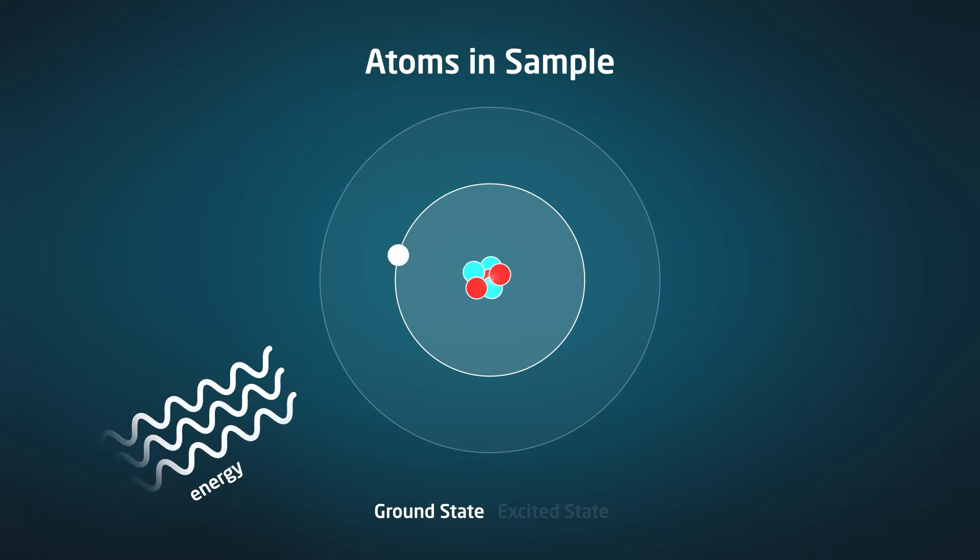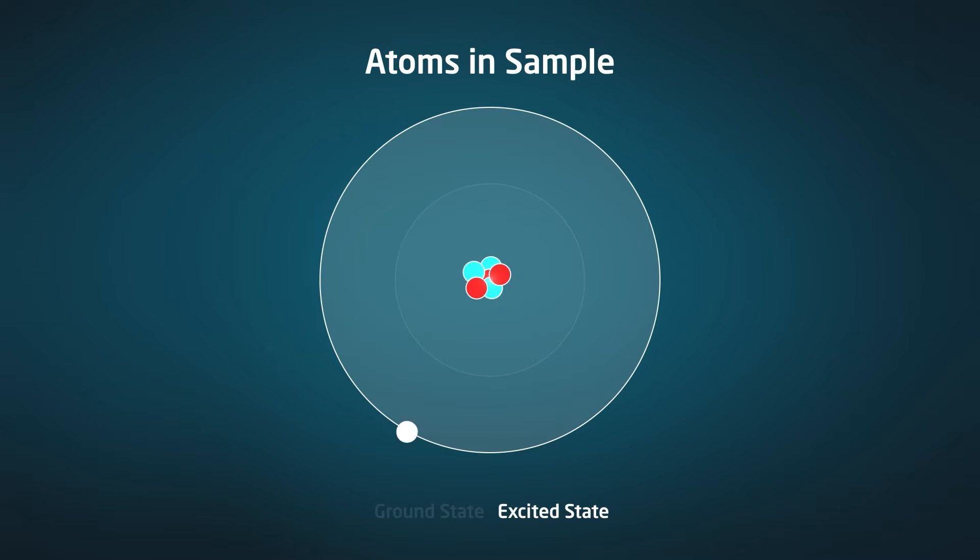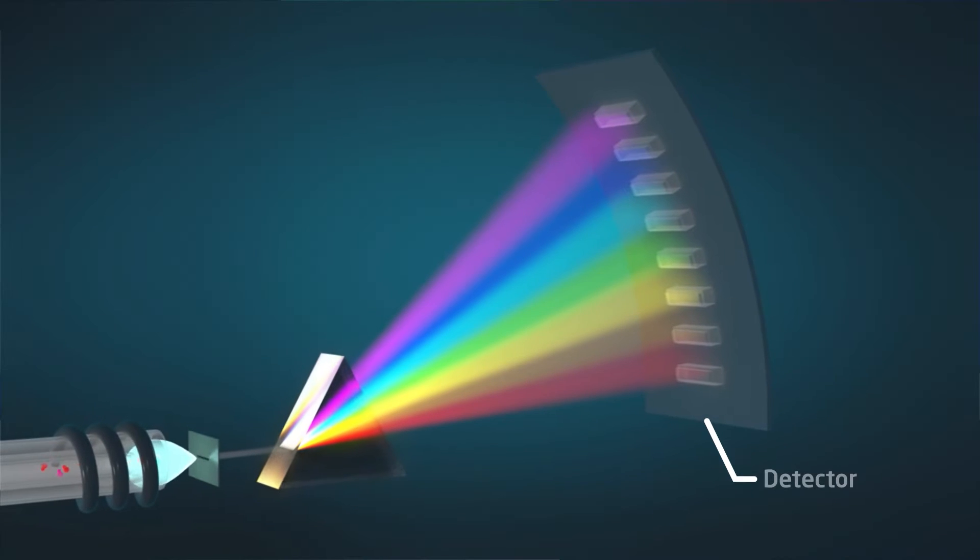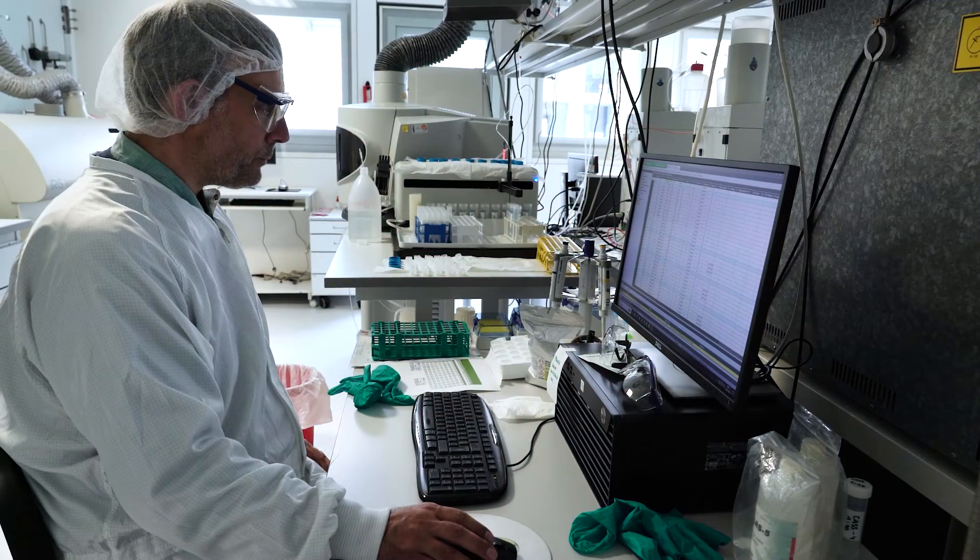This causes their electrons to move to an excited state. When the atoms return to their ground state, they emit a wavelength of light that is specific to that type of element. A detector measures and records the wavelengths of light emitted by the sample to determine the elements and their concentration in the sample.